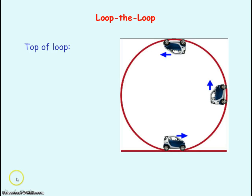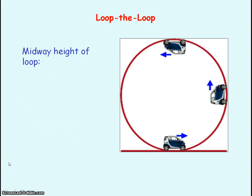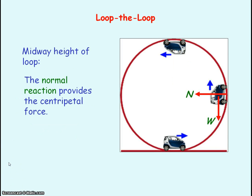If we consider an object that is going around a loop-the-loop, at the top of the loop, it is the weight of the object and the normal reaction on the object that provides the centripetal force. At the midway height of the loop, it is the normal reaction that provides the centripetal force.